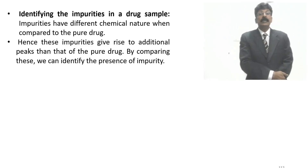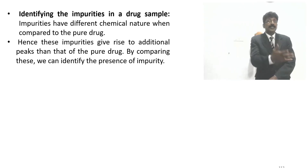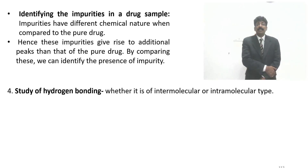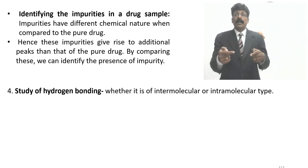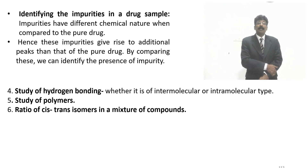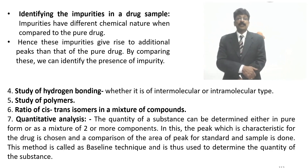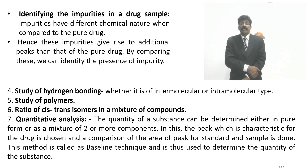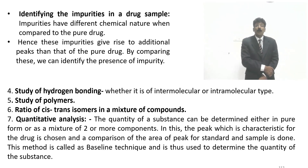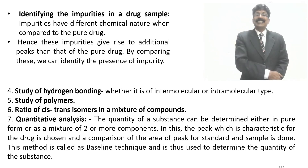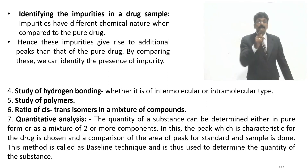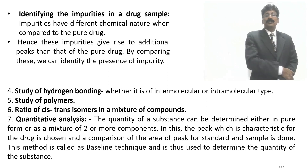Impurities have different chemical structures compared to the pure drug; these give rise to additional peaks in the cm⁻¹ spectrum. By comparing sample and pure drug spectra, the presence of impurity can be identified. IR spectroscopy can also be used to study hydrogen bonding — intermolecular or intramolecular. Study of polymers, ratio of cis and trans isomers, and quantitative analysis can also be done — the quantity determined from a pure form or mixture using the baseline technique comparing peak areas of standard and sample.